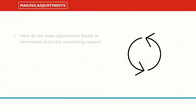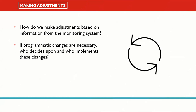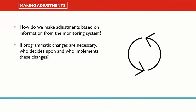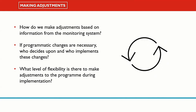Making adjustments: how do we adjust based on information from the monitoring system? Once monitoring data is reported, if programmatic changes are necessary, who decides upon and who implements these changes? Identifying where these responsibilities lie should be done at the outset where possible. It can also be important to establish what level of flexibility there is to make adjustments during implementation, which relates to factors such as donor requirements, timeframes, the operational model, program design, and the urgency and priority of the issues found.